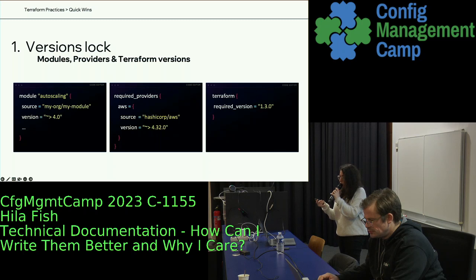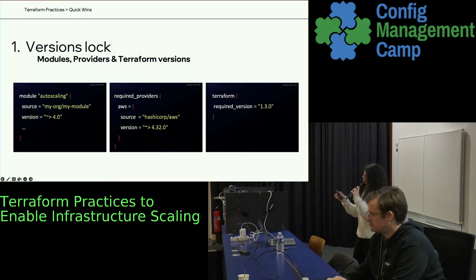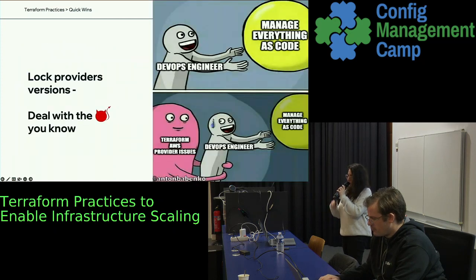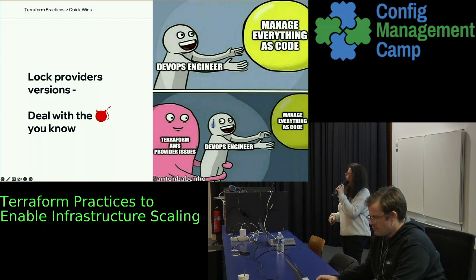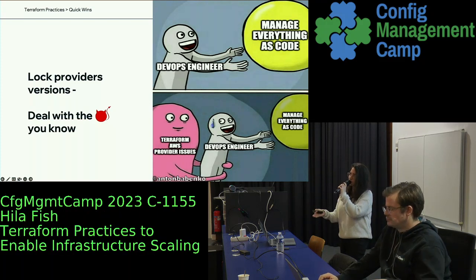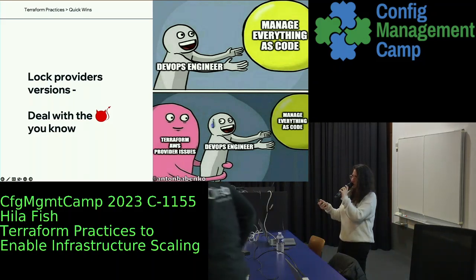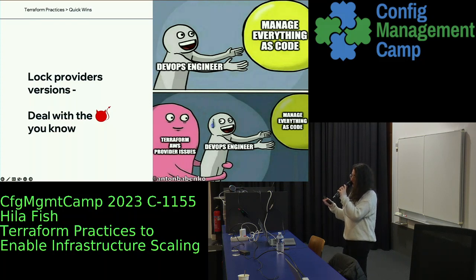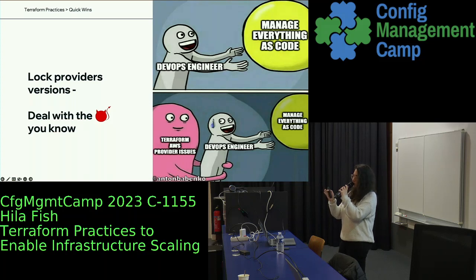Let's start with quick wins. When I mention quick wins, I mean low-effort, high-value things that will help you scale better and more efficiently and prevent refactoring and extra work later on. First of all, version lock. The same as you can lock versions for requirements.txt for Python, you can do the same for Terraform — lock modules, providers, and Terraform versions — because that way you know expected features, syntax, and do damage control for any bugs in a certain provider version. Anton Babenko created a meme about this: this is the main reason why to lock a provider version.